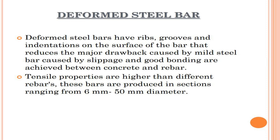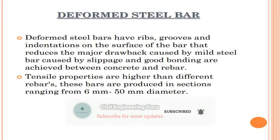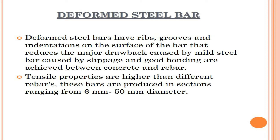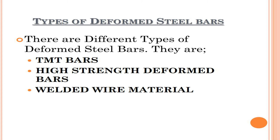Deformed steel bar: deformed steel bars have ribs, grooves, and indentations on the surface of the bar that reduce the major drawback caused by mild steel bar slippage, and good bonding is achieved between concrete and rebar. Tensile properties are higher than other rebars. These bars are produced in sections ranging from 6 mm to 50 mm diameter. Types of deformed steel bars include T, M, and D bars, high strength deformed bars, and welded wire material.